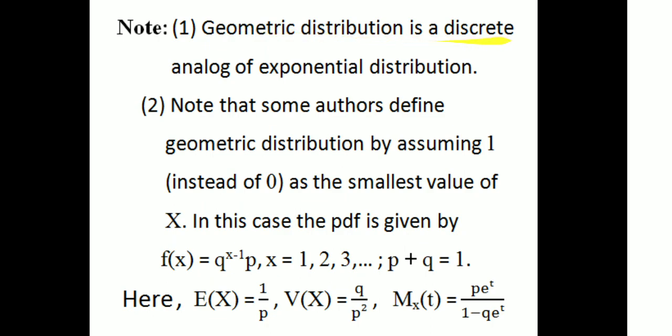Note that the geometric distribution is a discrete analog of the exponential distribution. Some authors define the geometric distribution starting with x = 1 instead of 0 as the smallest value. In that case, the PDF is f(x) = q^(x-1) · p, for x = 1, 2, 3, ..., with p + q = 1. Then E[X] = 1/p, Var(X) = q/p², and the MGF is M_X(t) = p·e^t / (1 - q·e^t).